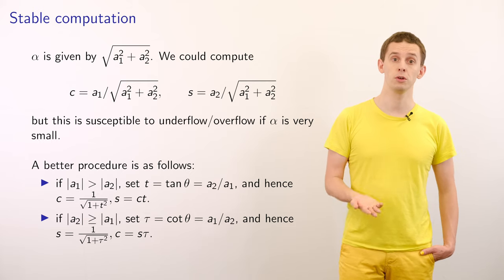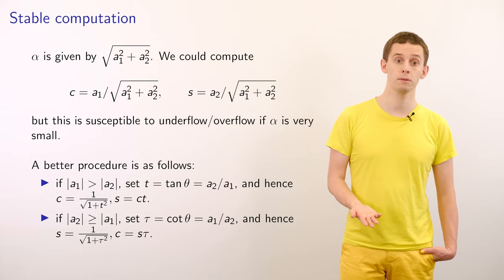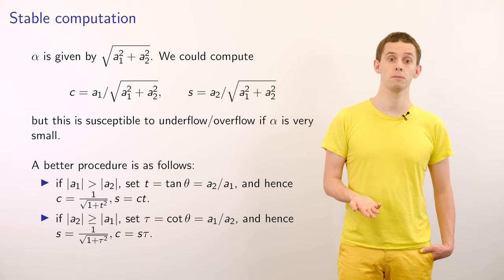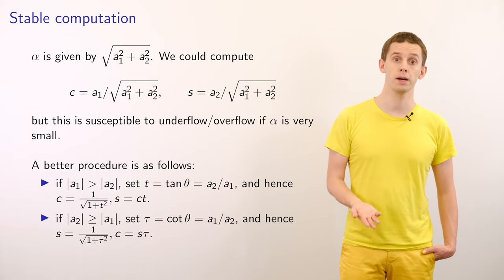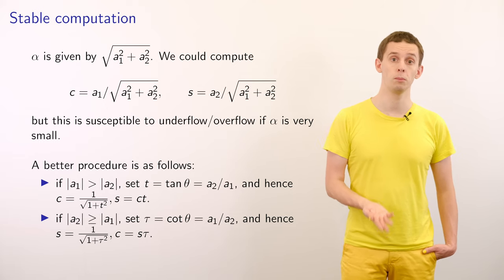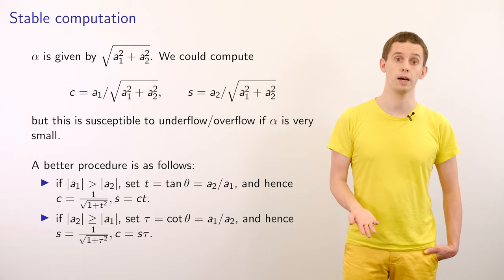If the magnitude of a_2 is greater than or equal to the magnitude of a_1, then we can define tau equal to the cotangent of theta, which will be equal to a_1 divided by a_2. And hence, s is equal to 1 over the square root of 1 plus tau squared, and c is equal to s times tau.